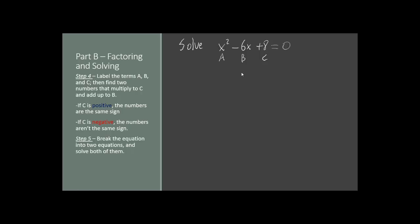Now that we have all the terms moved to the left and written in simplest form, we need to solve the equation by factoring it. Like in the previous episode, I labeled the x-squared term as a, the x term as b, and the constant term as c. What we need to do to factor this is find two numbers that multiply to c and add to b — so two numbers that multiply to 8 but add to negative 6.